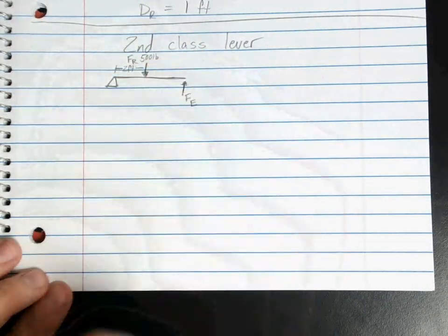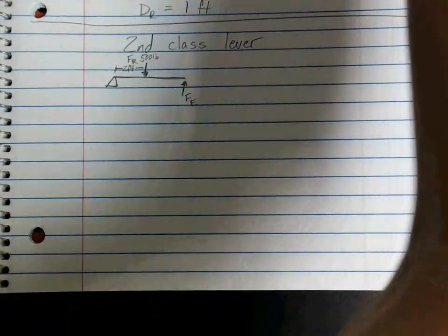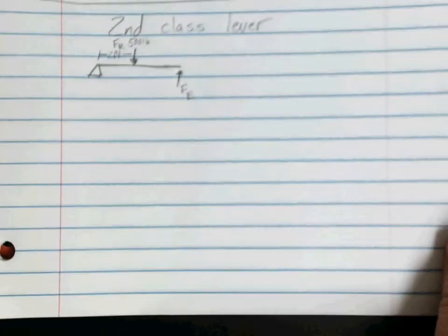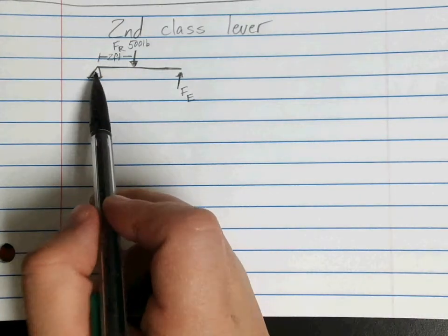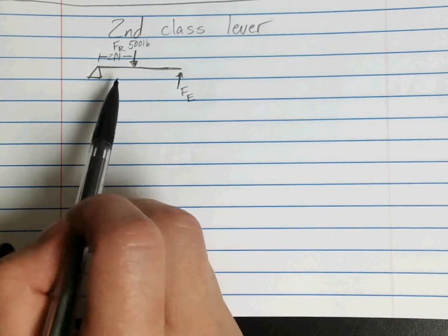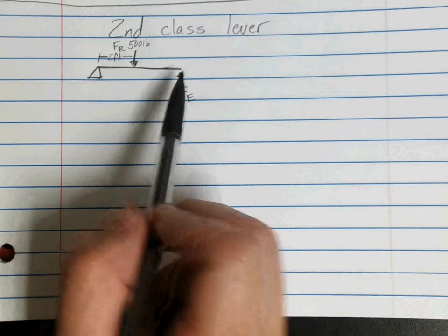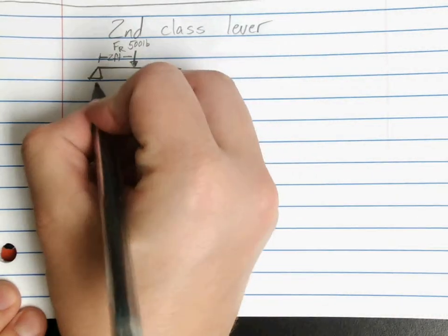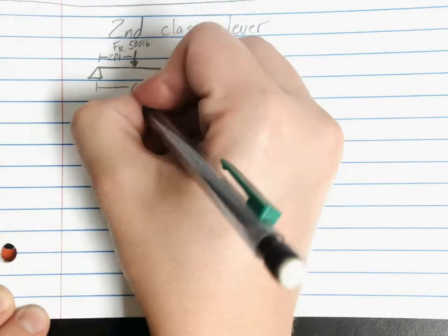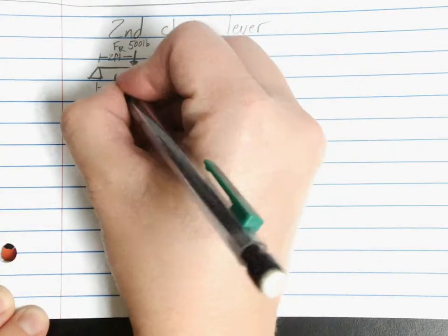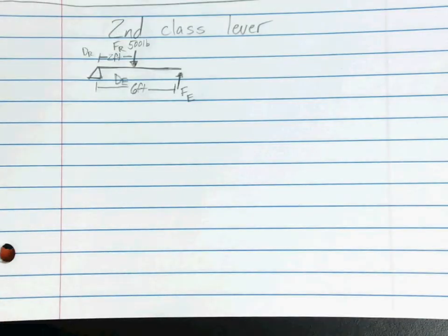I'm realizing that was hard to see. Apologize for that. So two feet, and then from the wheel all the way to your effort force, it's going to be six feet. So this is your DE, this was your DR, just so that they're labeled.